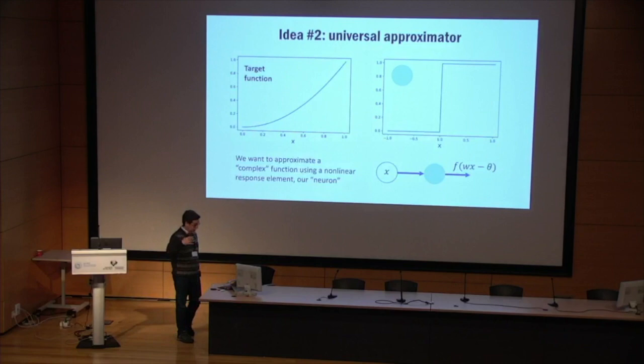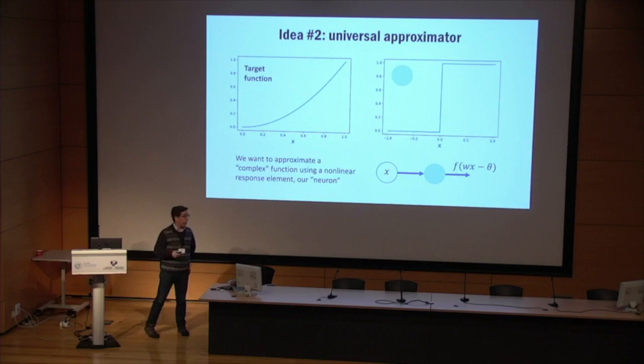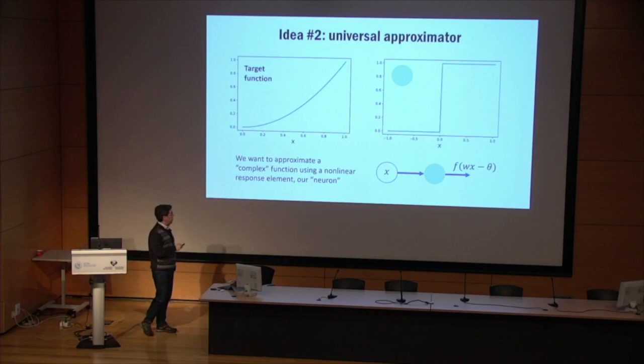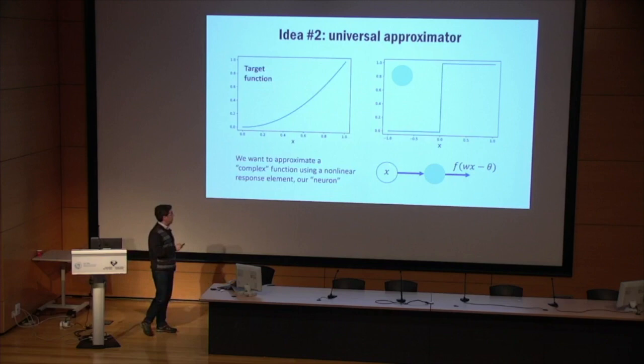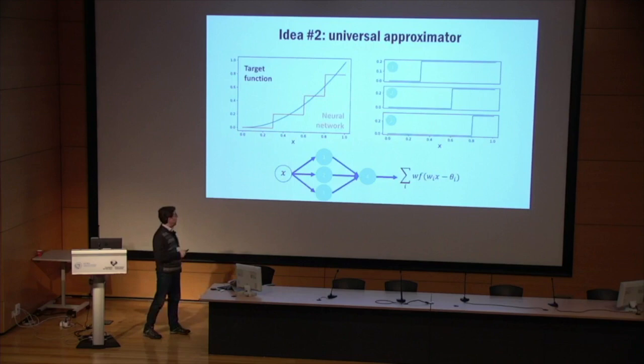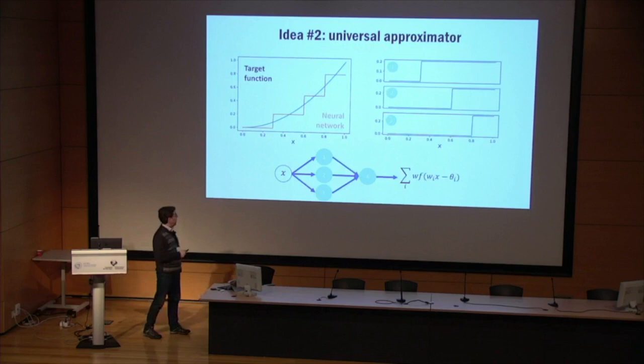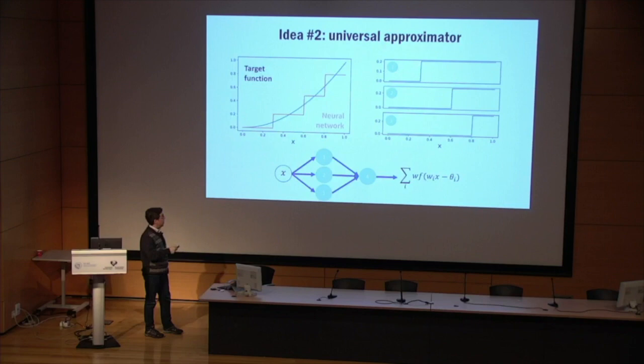The idea is that we use these nonlinear devices for approximating actual functions that we don't really understand how they work. So I would have some function I want to approximate, and I have either a stepwise or smoother response function. The only thing I need is that this function goes from 0 to 1 within the interval of inputs on the real axis. Once I have one of these, I can combine them to approximate arbitrarily complex functions. I can optimize the weights and the thresholds, and the output of this combined network is the approximation of the function I want to use. This is a toy example I took from Andrew Ng's Coursera course.